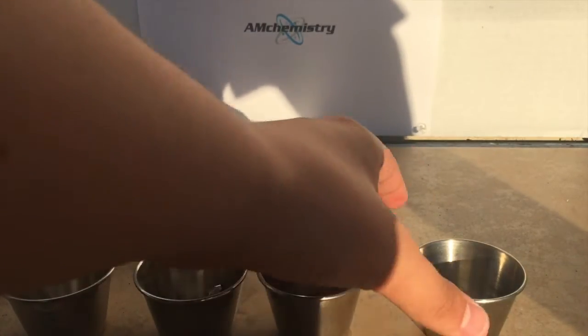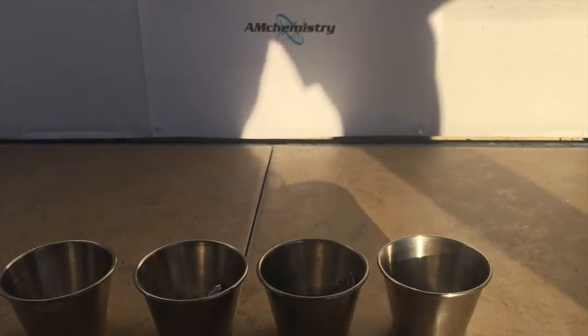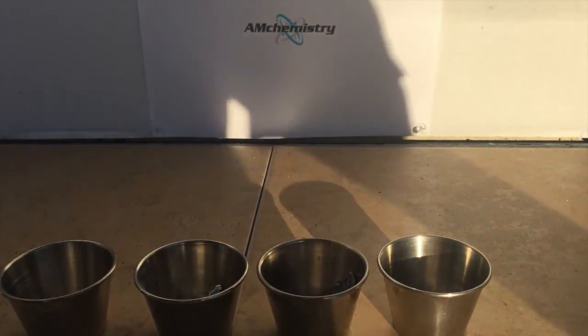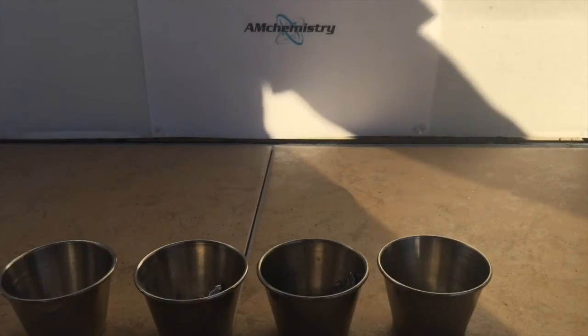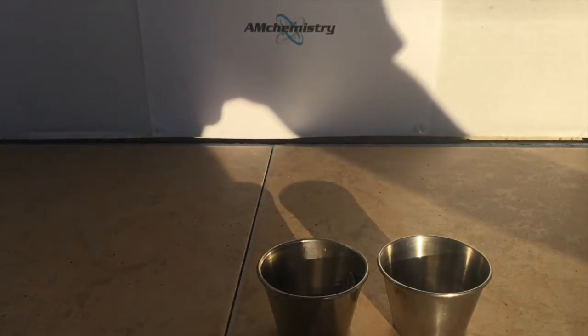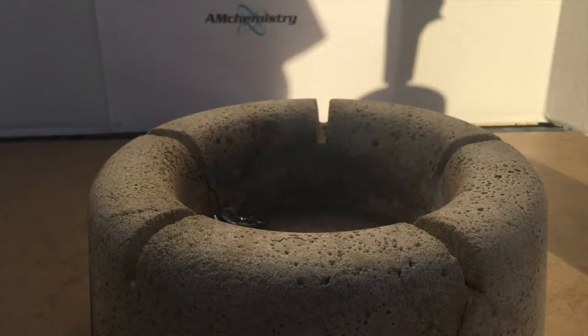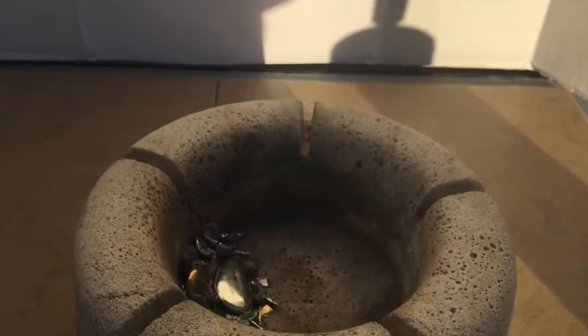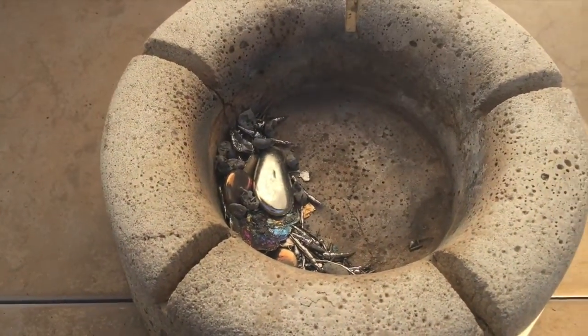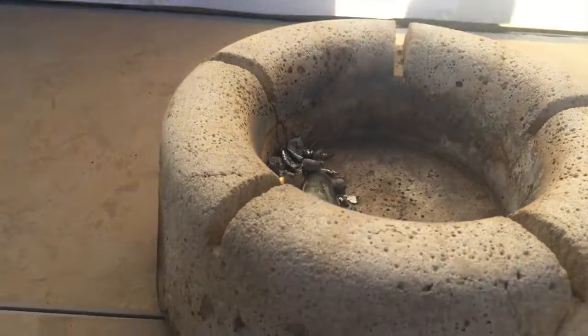lead, 50% bismuth and 12.5% tin. Now you just mix all the metals together in a container. Once all the metals are mixed together, just melt them together.